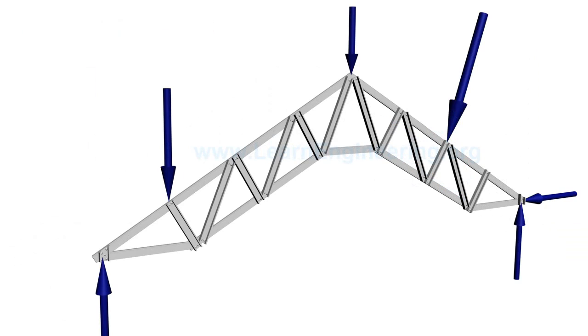If you want to determine load in the blue member using method of joints, you have to proceed in the following manner, from one joint to another joint. In short, you have to analyze five joints to determine force in the member.